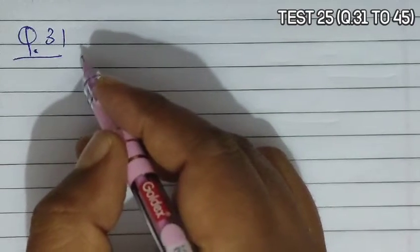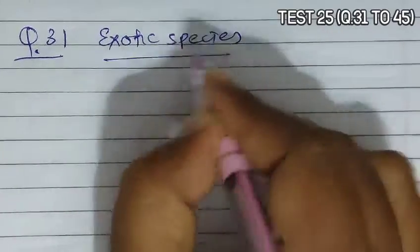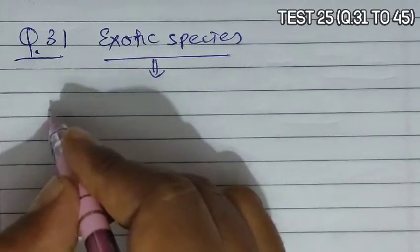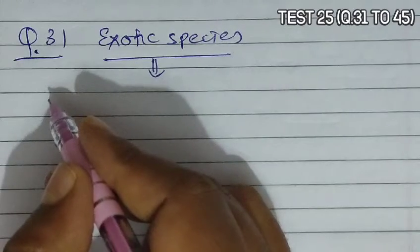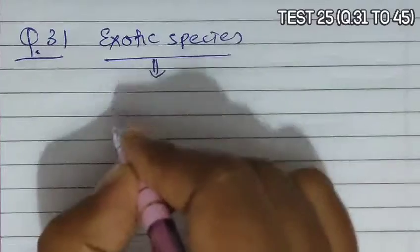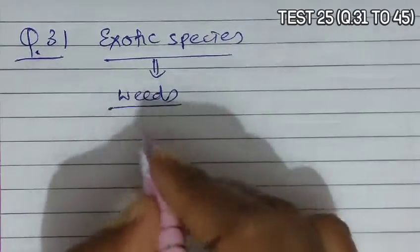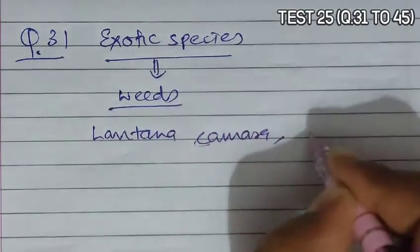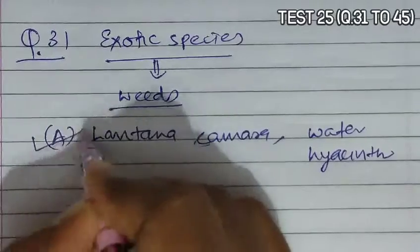Question 31 asks which one of the following pairs of organisms are exotic species introduced in India. A large variety of exotic animals and plant species have been introduced from other parts of the world through the ages. Some exotic species have turned into weeds, multiplying faster and causing harm to the ecosystem. The correct example is Lantana camara and water hyacinth, so option A is the correct answer.